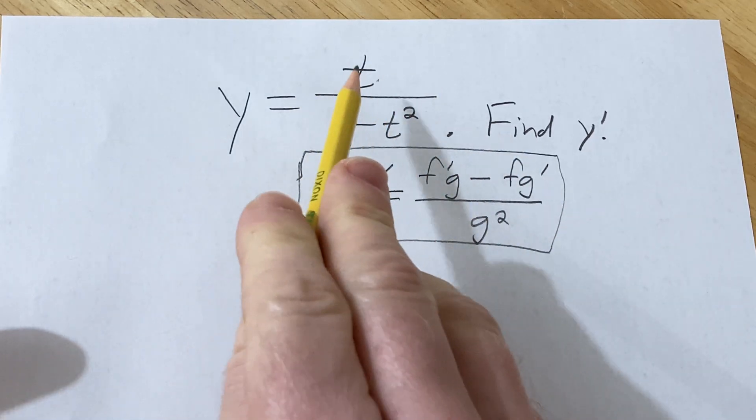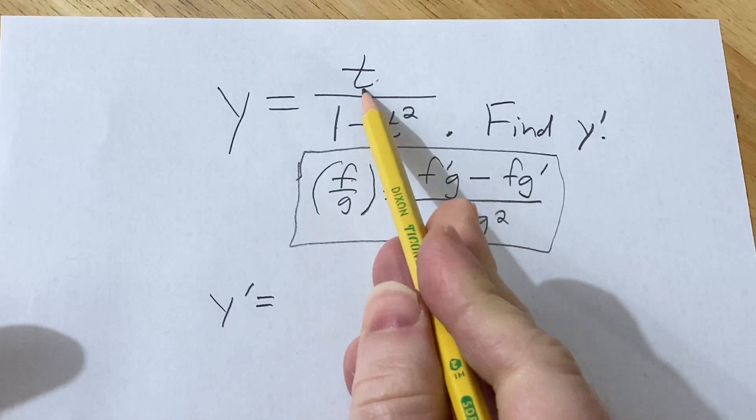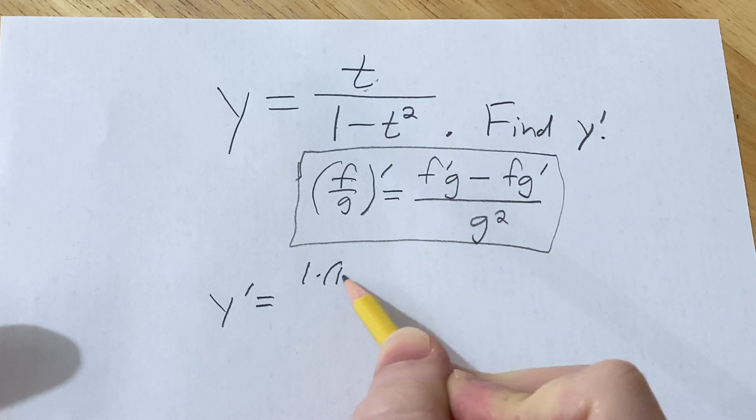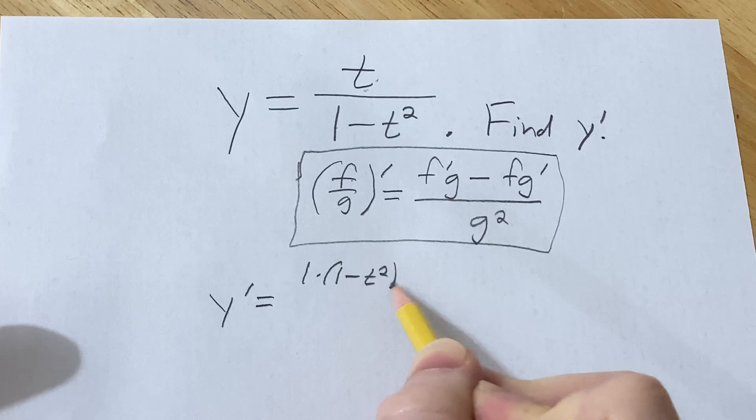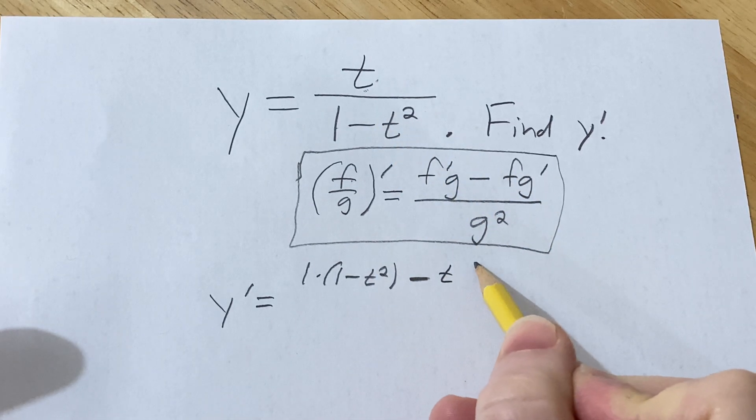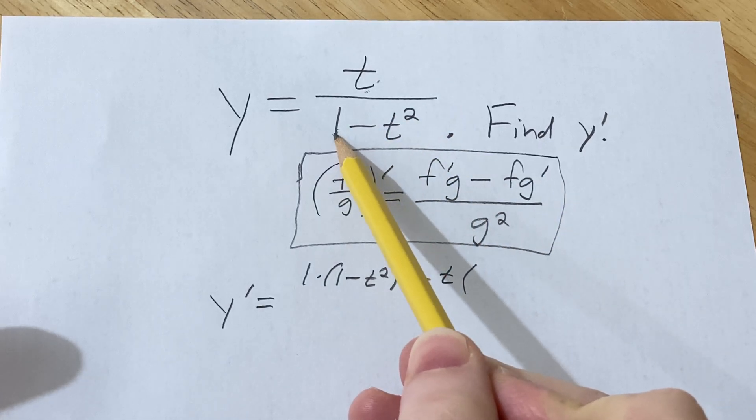So here we can apply this formula to this particular example. So y prime is equal to the derivative of the top function—well the derivative of t is just 1—times the bottom, minus the top function, which is t, times the derivative of the bottom function. So the derivative of 1 is 0, because it's a constant.